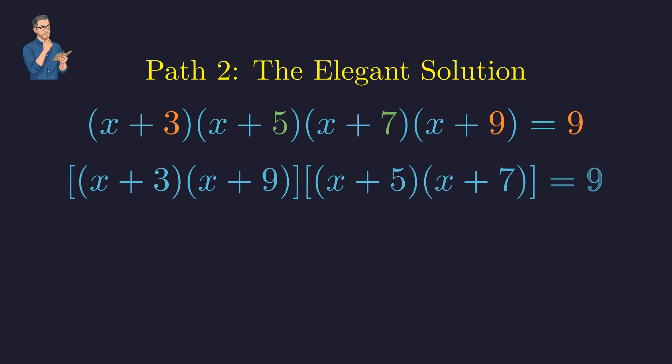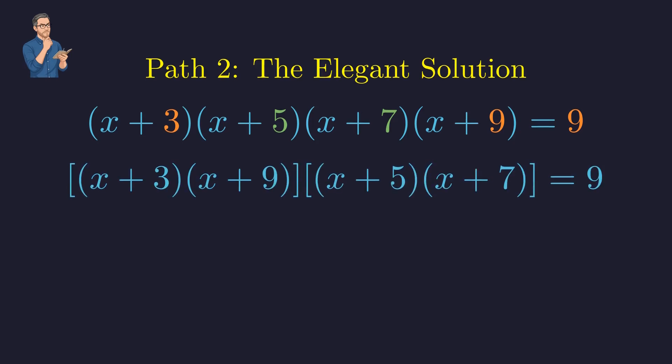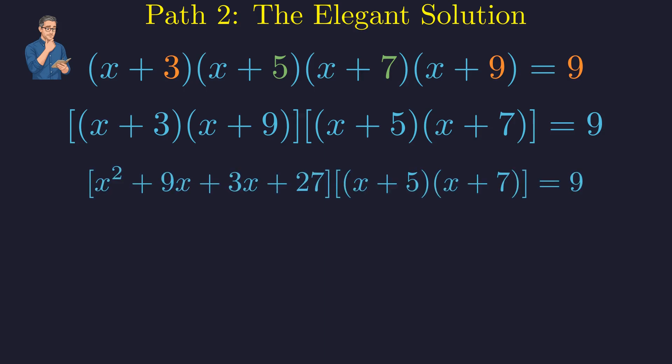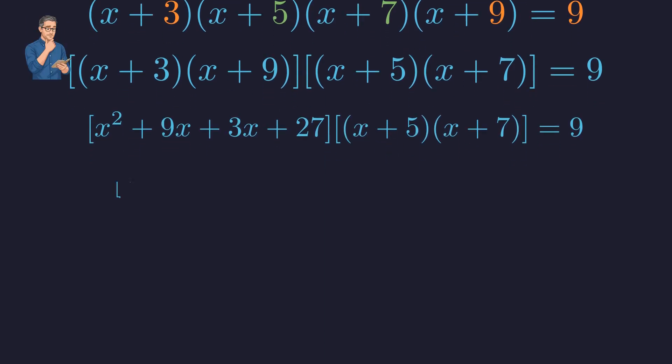We group the pairs that sum to 12. Now we expand each bracket separately. First, we expand the first bracket using FOIL. Combining the middle terms gives us this quadratic.